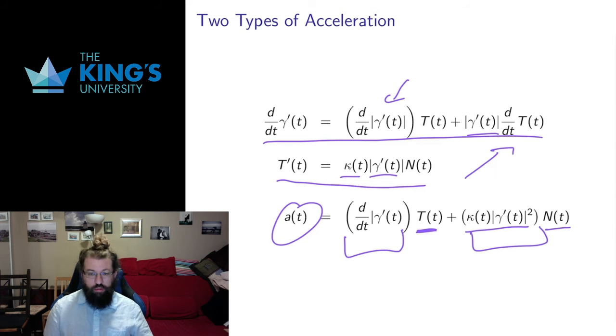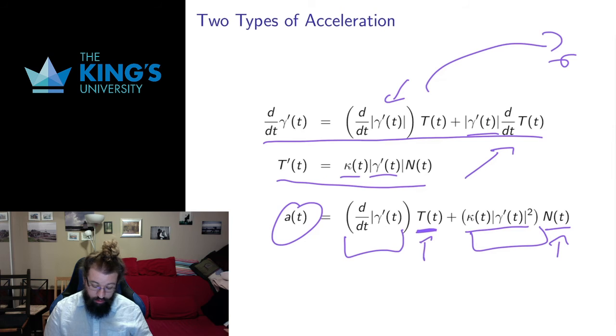This is the tangent direction, so I have an acceleration in the tangent direction. This is the normal direction, so I have an acceleration in the normal direction. If my parametric curve is moving here, my tangent direction is here and my normal direction is here. These are both unit vectors, so they're giving me the direction of movement, and the normal is giving me the direction of curvature.